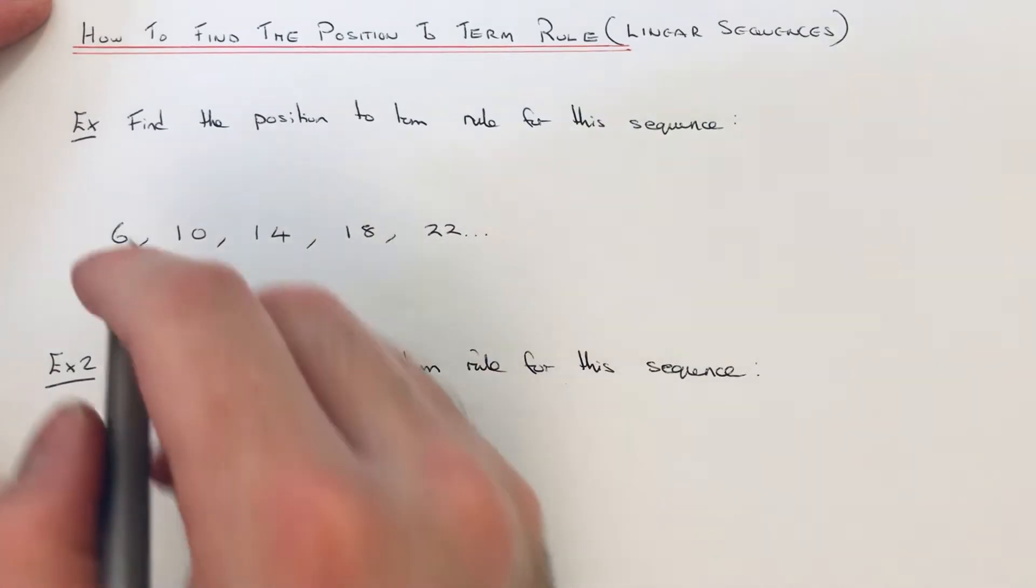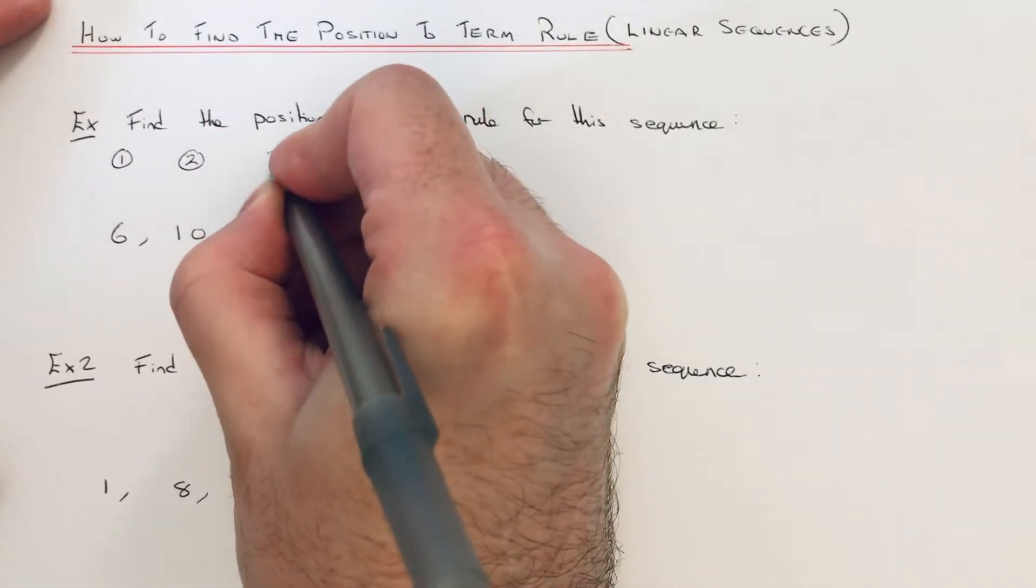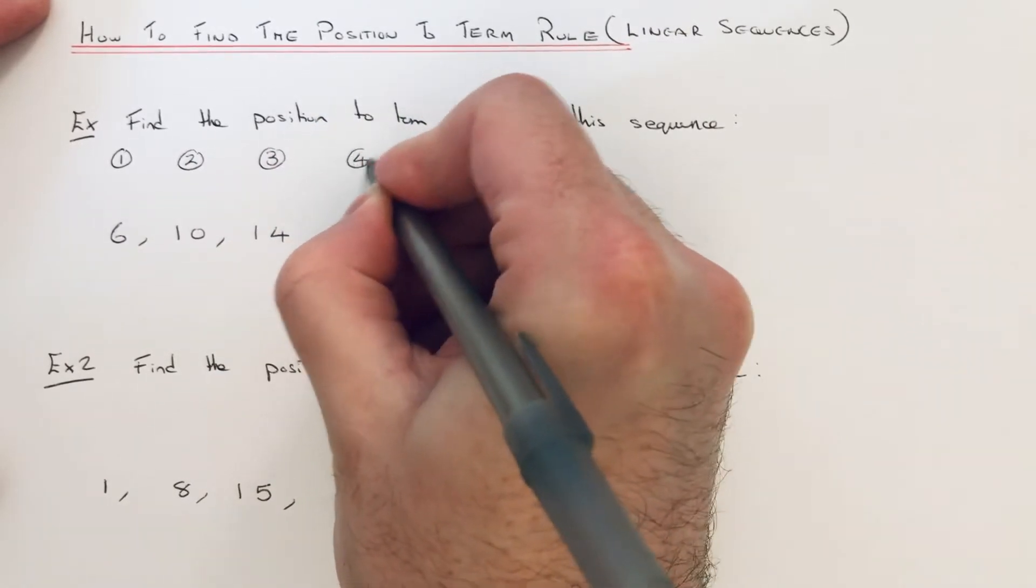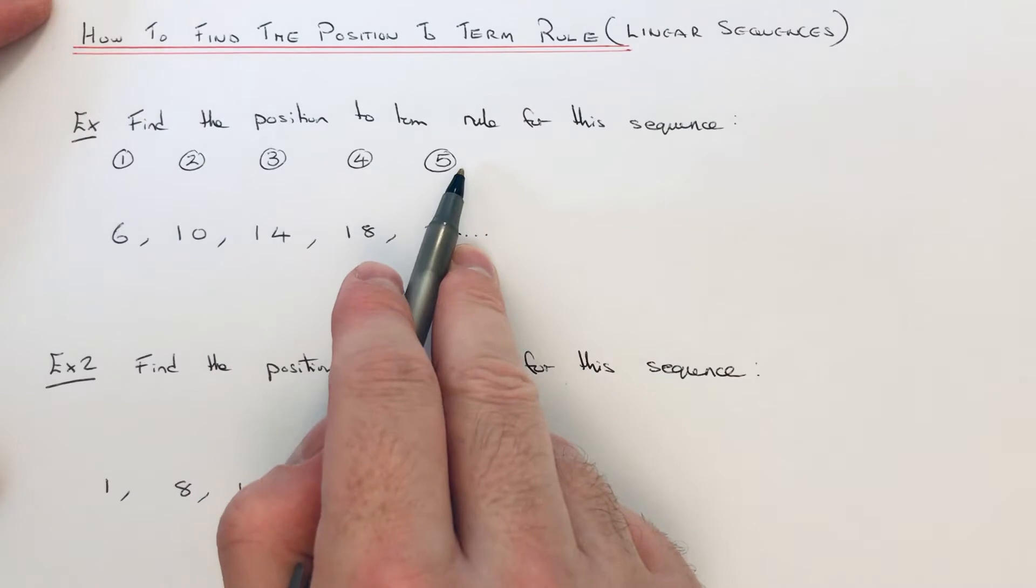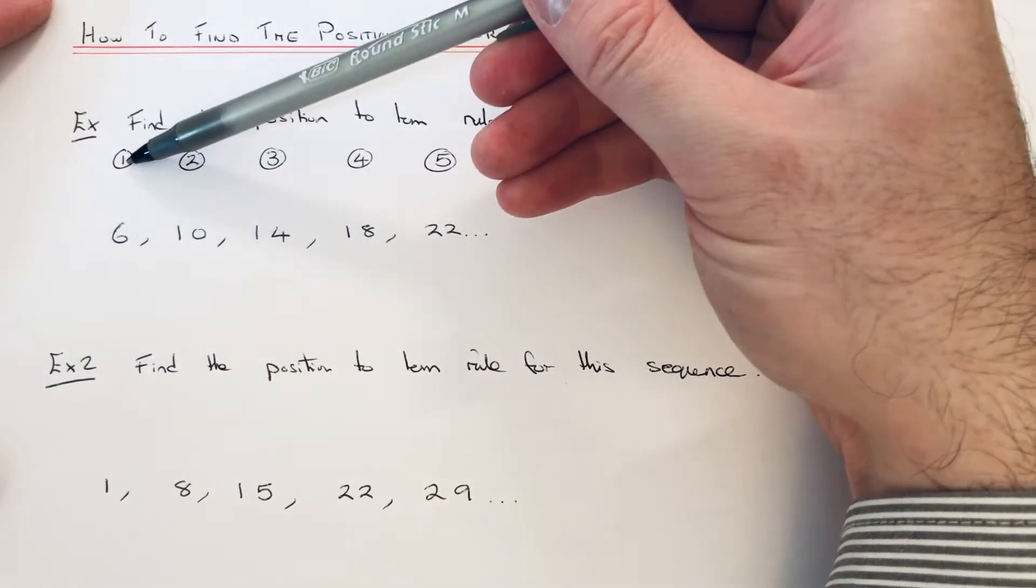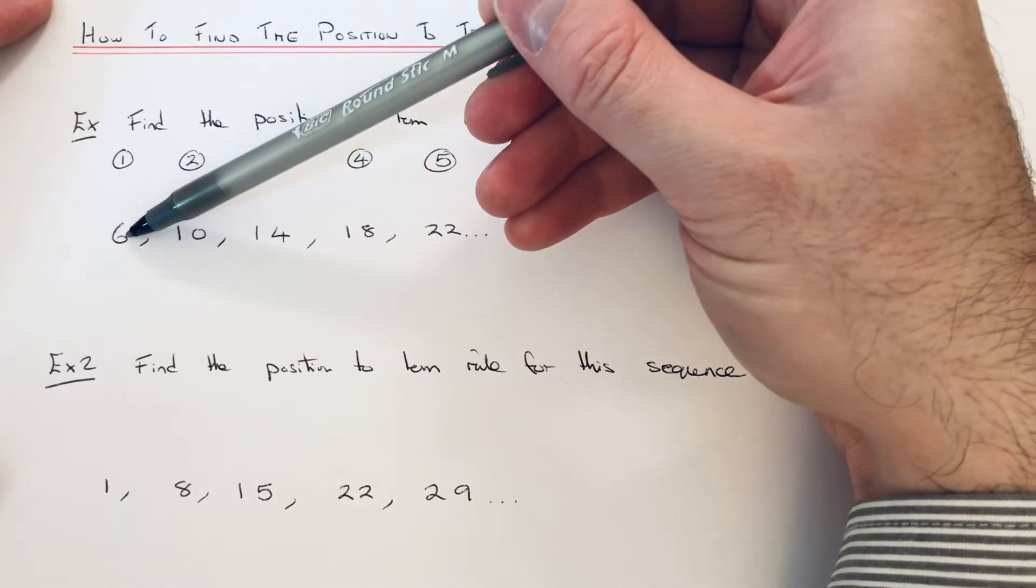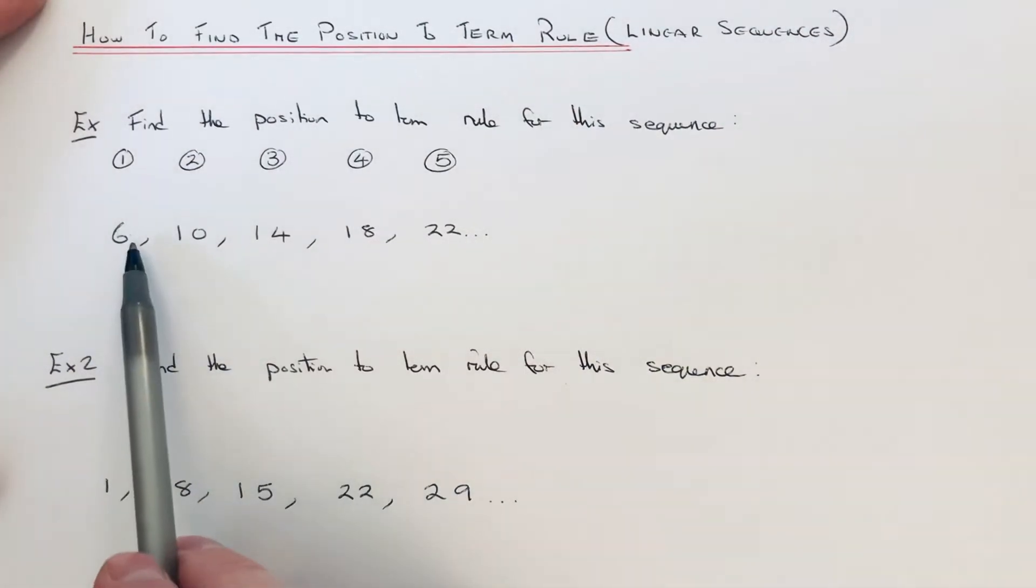The first thing I want to do is write the numbers 1 to 5 above the sequence. These are called our position numbers, and what we need to do is look for a rule which takes us from the position numbers to the numbers in the sequence. Now, to do this, you might have noticed that the sequence is increasing by 4 each time.